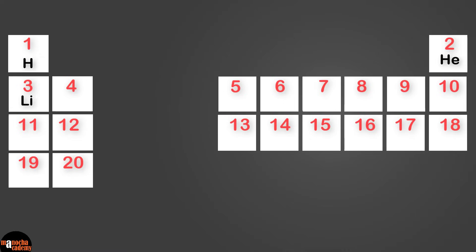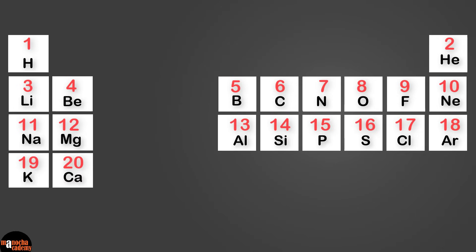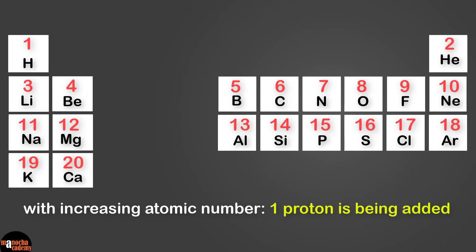So there we have lithium, beryllium, boron, carbon, nitrogen, oxygen, fluorine and neon. Fill up all the way till element number 20, that is calcium. With every element filled in here, the atomic number is increasing by 1. So what does that mean? One extra proton is being added in the nucleus.